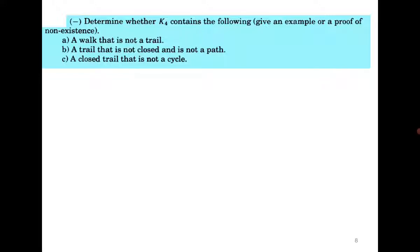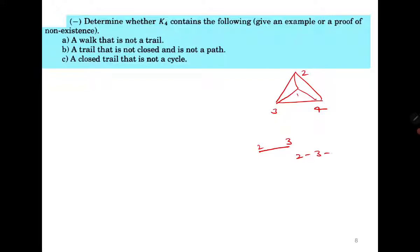Consider the complete graph K4. You need to give an example or state that it does not exist for each case. First, a walk that is not a trail — this is easy. You can go from vertex 2 to 3 and come back to 2, so the walk 2, 3, 2 has an edge repeated and therefore it is not a trail.